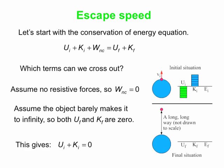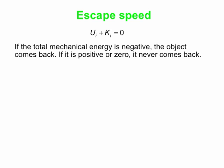So Ui plus Ki is equal to zero. By the way, if Ui plus Ki, which is the mechanical energy, is some negative number, then the object does fall back down. If it's zero or positive, then it never comes back. In our case, it's zero. This is where it switches over from coming back to never coming back.